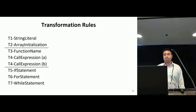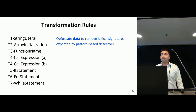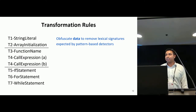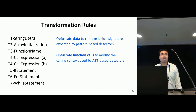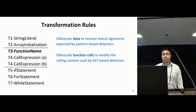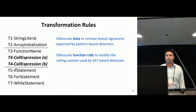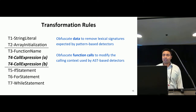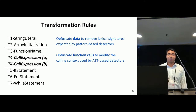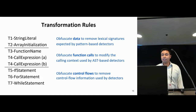We define seven of these transformation rules, and they fall into three groups. The first group obfuscates data literals that pattern-based detectors use as lexical signatures. The second group obfuscates function calls that AST-based detectors use as calling contexts. In this group, the first rule targets function calls with names typically used in malware, such as eval. The second rule targets general JavaScript function calls, with version A compatible with the MVP release of WebAssembly but unable to support calls with return values, while version B requires the reference types language proposal and does support return values. The third group obfuscates control flow constructs to remove this information from use by detectors.